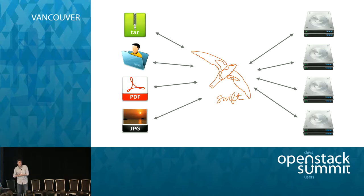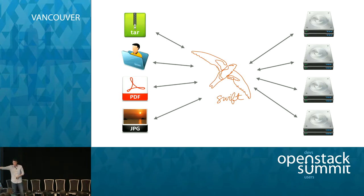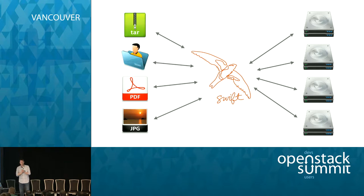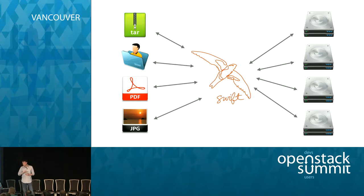Swift is a system that separates out the data you have from the media upon which it is stored. That separation is incredibly powerful — it means you no longer have to worry about whether a particular hard drive or tape is intrinsically tied to the data. Swift is built for scale to store a ton of data on many different hard drives, optimized for durability, availability, and concurrency across the entire dataset.